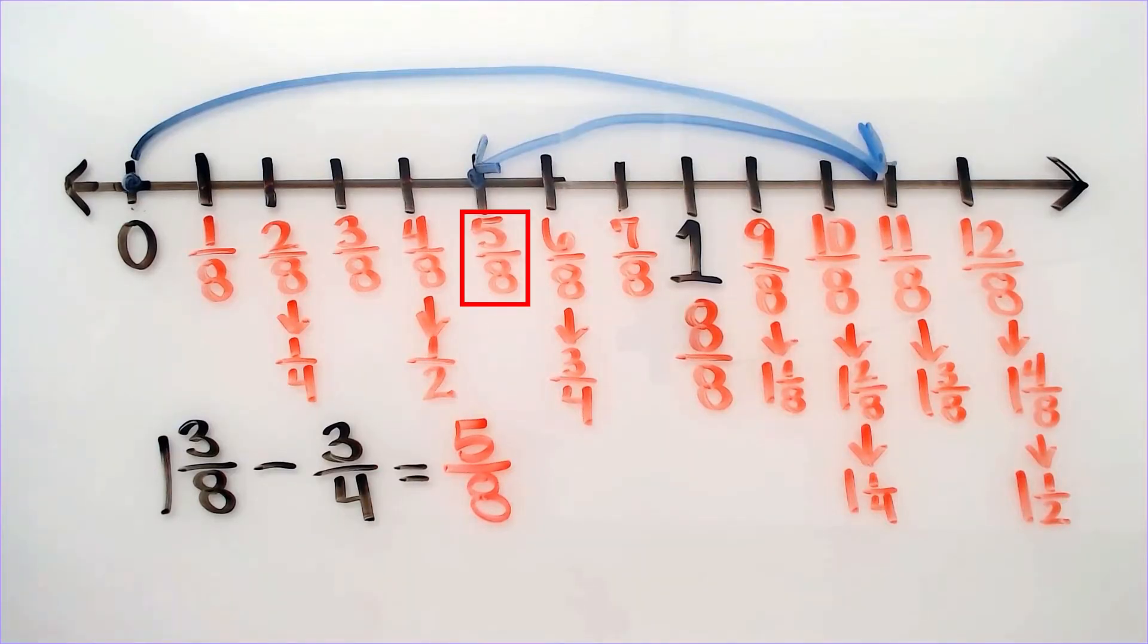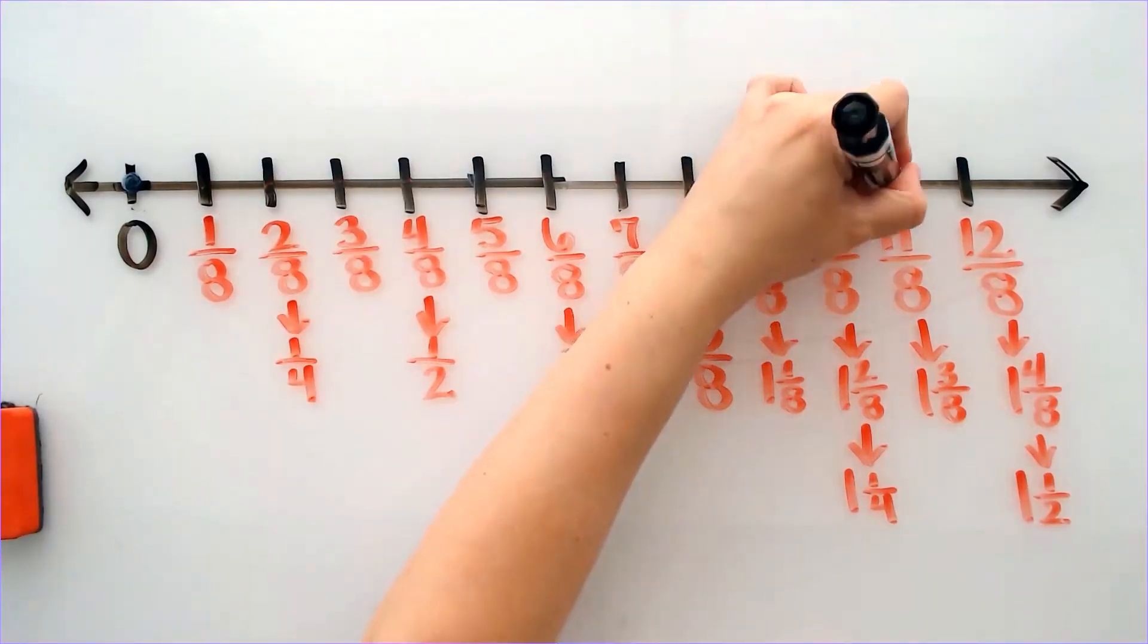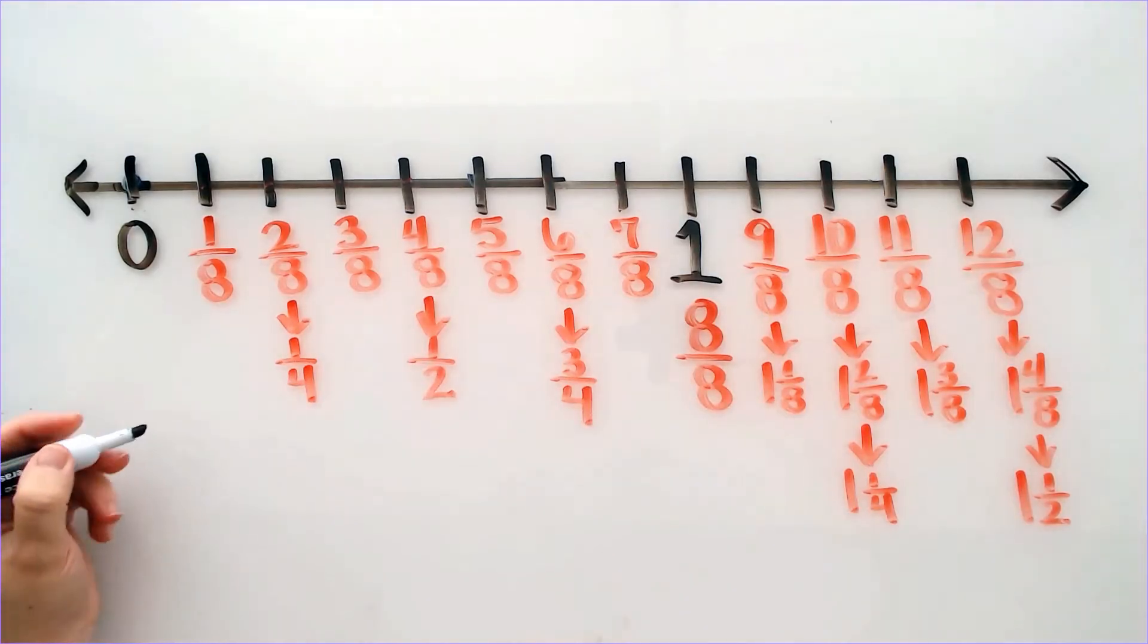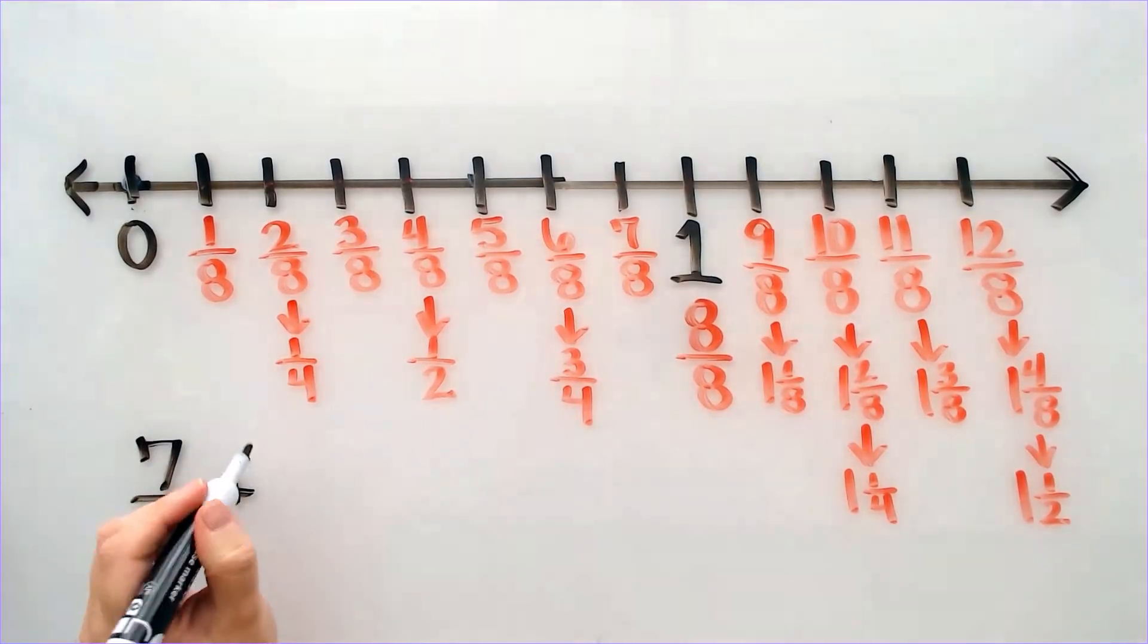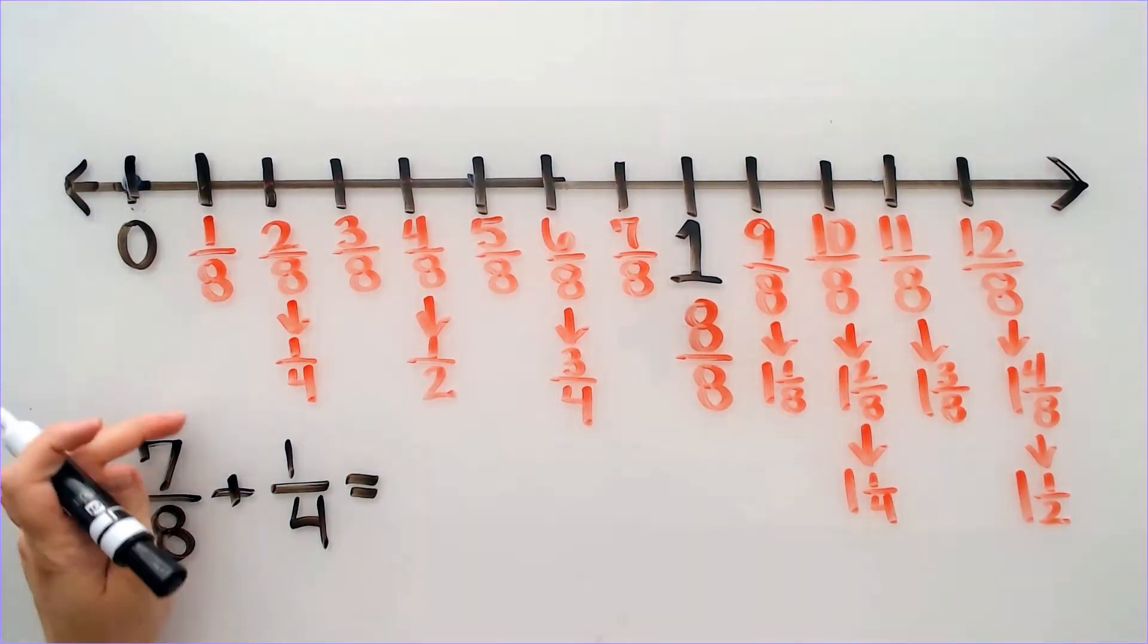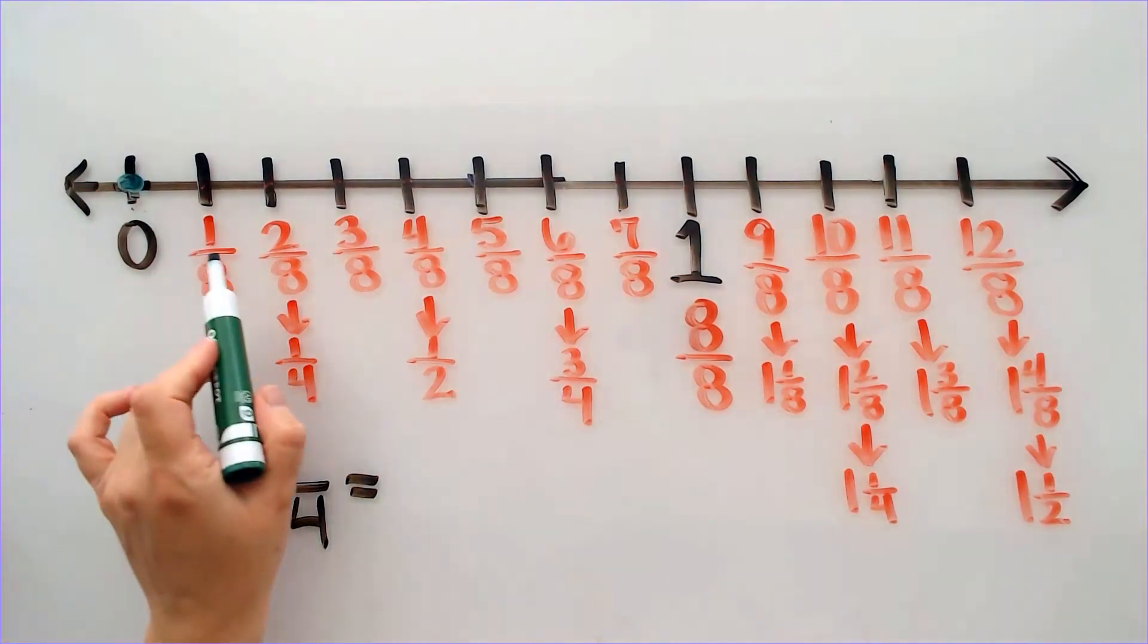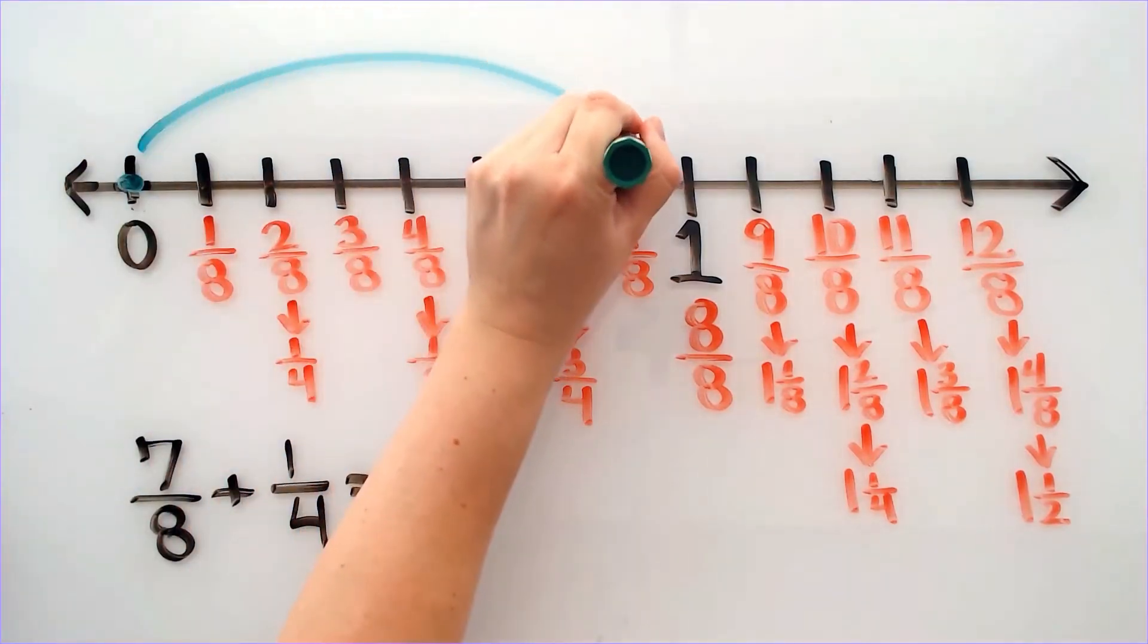Let's look at one more problem. So let's look at an addition problem involving fractions. Let's say I want to do 7 eighths plus 1 fourth. Very similar to the last problem, I am going to locate 7 over 8. So from the number line, I am going to start at 0, and I can see here is 7 over 8. So I am going to jump over to 7 eighths.